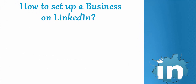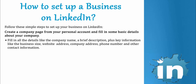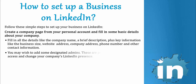Let us now understand how you can set up your business on LinkedIn. To set up your business, you just need to follow some simple steps. You first need to create a company page from your personal account and fill in some basic details about your company — like the company name, a brief description, the size of your business, the website address, company address, contact number, and any other contact information if available. You can also add some designated admins, who have access to change your company's LinkedIn presence and allow others to make changes to the page.